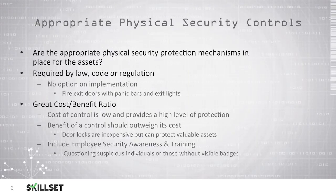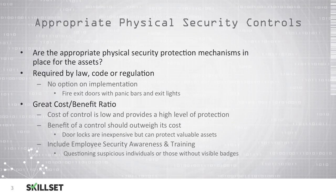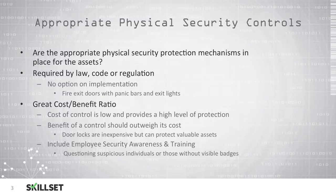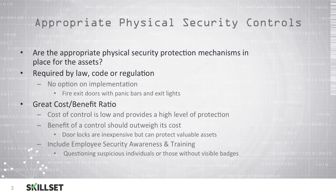Sometimes these physical security controls are required by law, by code, or by regulation in your local area, and you may not have any choice but to implement these options. Some examples are exit doors with panic bars so that employees can exit in case of an emergency, and also exit lighting to guide individuals to an exit in case there's a problem. Whenever you're placing a control in place, you should make sure that you have a good cost-benefit ratio. You would like the cost of the control to be low and have it provide a high level of protection, and the benefit of your control should always outweigh its cost.